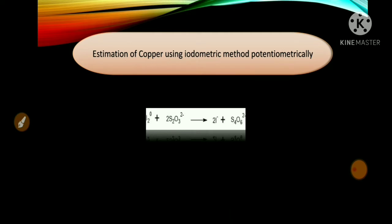In this method, a cell is set up which consists of a calomel reference electrode and an oxidation-reduction electrode as indicator electrode, which is sensitive to iodide ion concentration. Iodine gets reduced during the course of titration. The change in electrode potential is due to change in activities of iodine, which is in zero oxidation state and then reduces into iodide ion in the solution. The amount of iodine liberated depends upon the concentration of copper ions present in the solution.